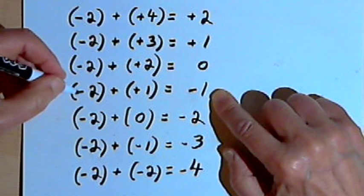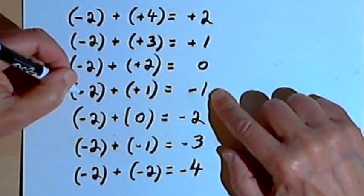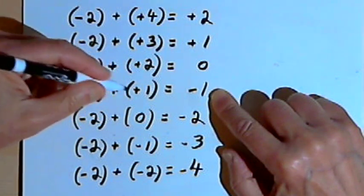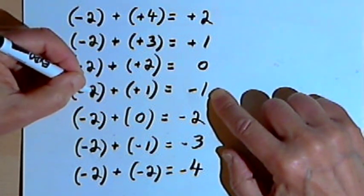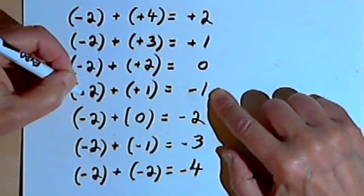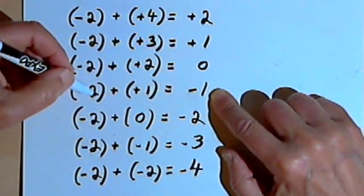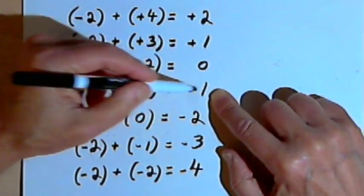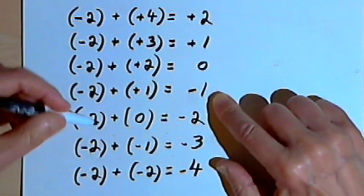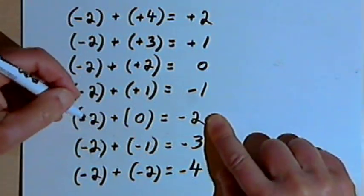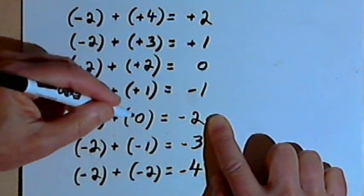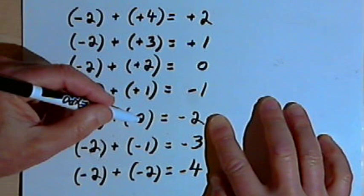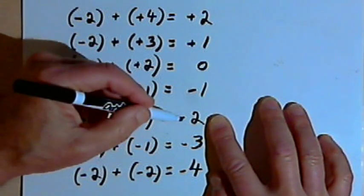Now my results are going to turn negative. Negative 2 plus positive 1: the larger of the two absolute values is the 2, which means I use its sign — negative — and find the difference between 2 and 1, which is 1. So the answer is negative 1. When I have negative 2 plus 0, adding 0 doesn't change the value at all, so negative 2 plus 0 is just negative 2.